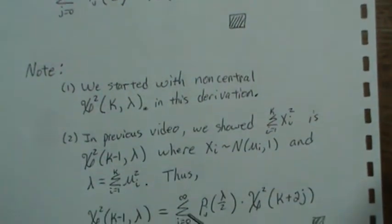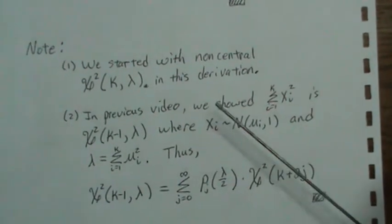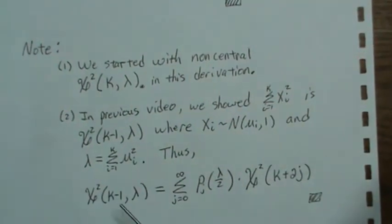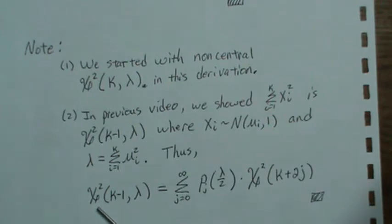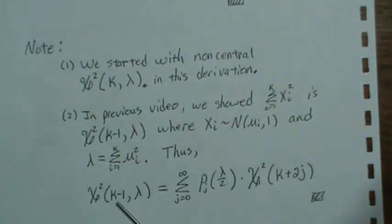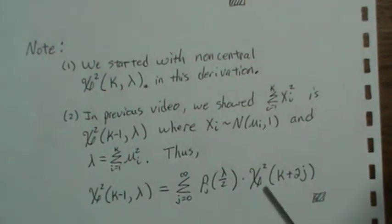So thus, in the video that I did before, that density was a non-central chi-square with k minus one lambda, which would then be rewritten as this. That extra one over here goes away.